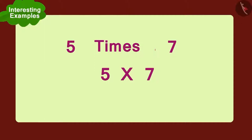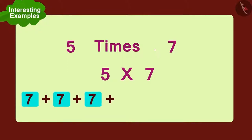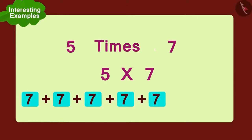Now, how will we do this using the method of addition? Seven added to seven, again add seven, again add seven, and finally add one more seven. So what is the total number of flowers? Thirty-five flowers.